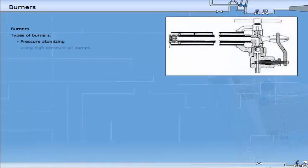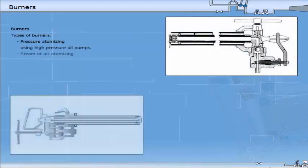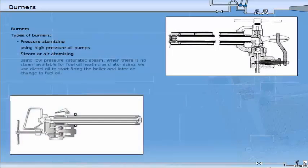Pressure atomising using high pressure oil pumps. Steam or air atomising using low pressure saturated steam. When there is no steam available for fuel oil heating and atomising, we use diesel oil to start firing the boiler and later on change to fuel oil.